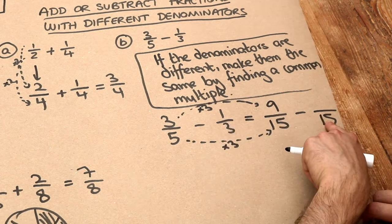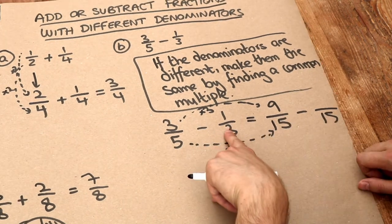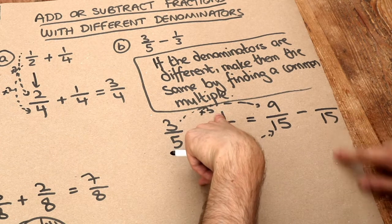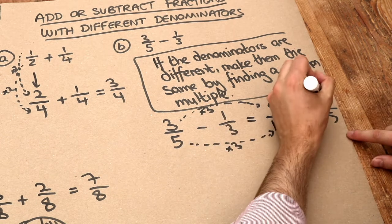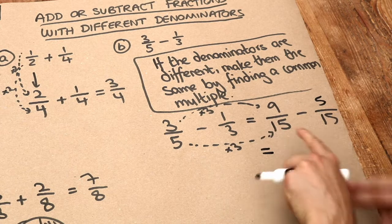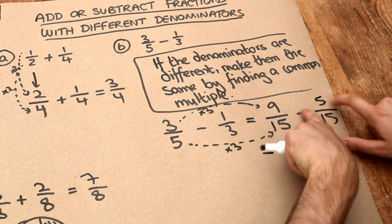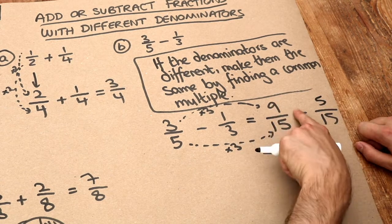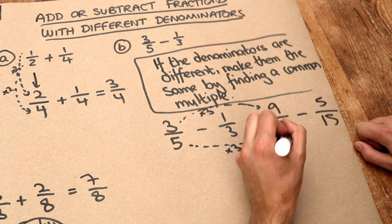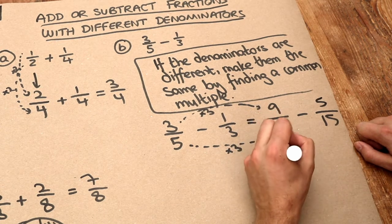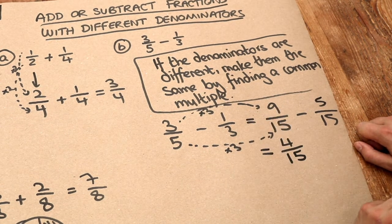And 1/3 is the same as how many fifteenths? Well we multiply the denominator by 5, so we need to multiply the numerator by 5. The 1 becomes 5. And now same denominator. So we can just subtract these numerators. 9 minus 5 is 4. So we have 9/15 and we subtract 5/15, we have 4/15 left.